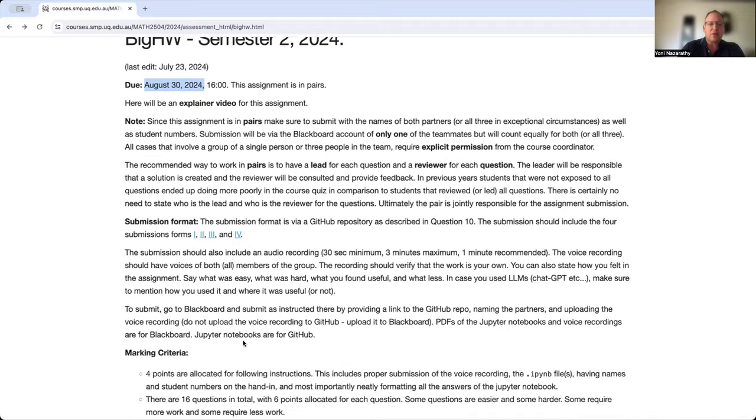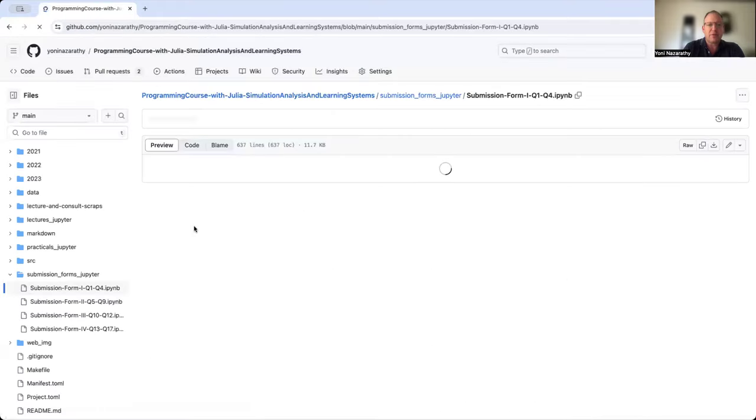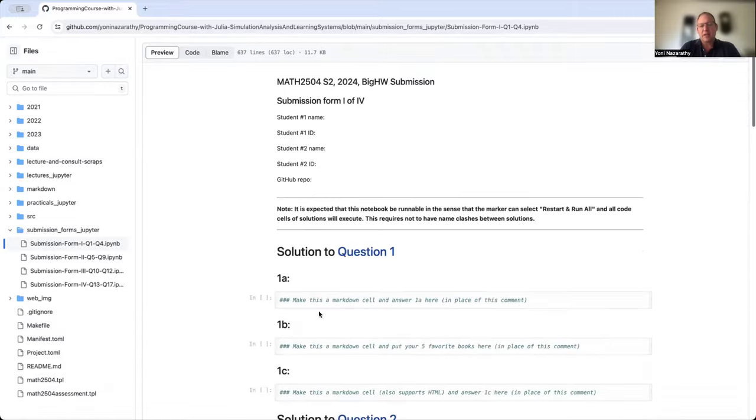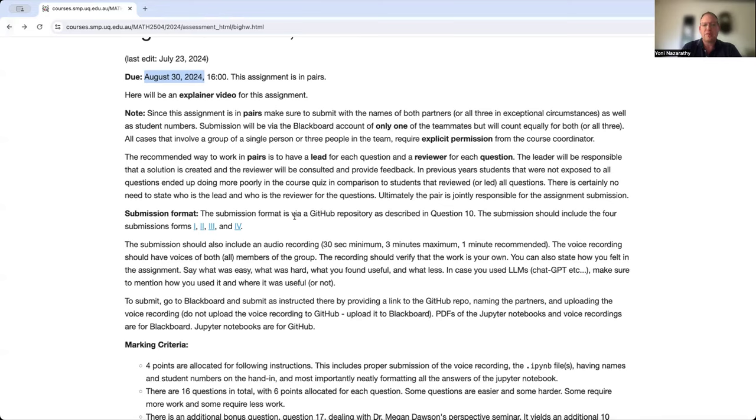The submission format: you submit on these Jupyter notebooks where there are actually places for you to write the solutions either textually or computer code or combination. These are going to be on your GitHub repository. Question 10 deals with the GitHub repository. And you also then print everything as a PDF file, put in one PDF file and upload a PDF file. That's to Blackboard. So PDFs are for Blackboard, Jupyter notebooks are for the GitHub repo. When you submit in Blackboard, you also put a link to your GitHub repo.